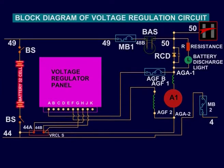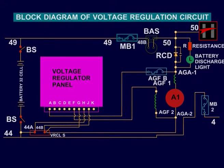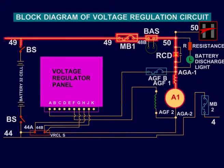Battery is provided as backup supply for control and auxiliary load. The battery is connected between cable number 49 and cable number 44 through battery switch BS. The battery ammeter shunt, or BAS, is connected between cable number 49 and cable number 50 through circuit breaker MB1. The battery is charged by the auxiliary generator when the diesel engine is running.